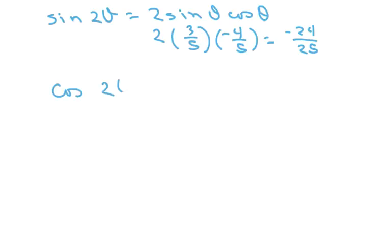Cosine of 2 theta, I'm going to use cosine squared of theta minus sine squared of theta, which is negative 4 over 5 squared minus 3 fifths squared.